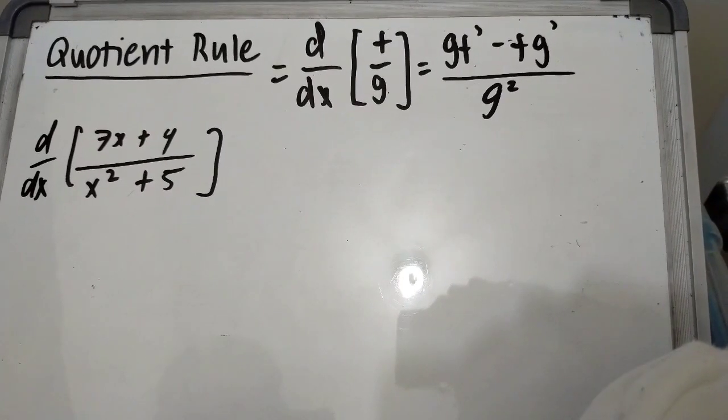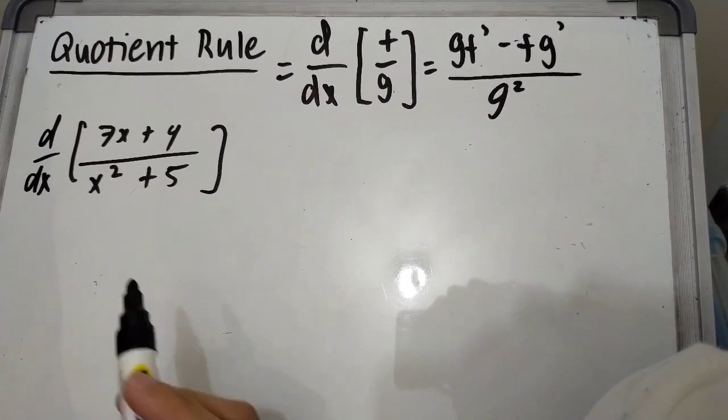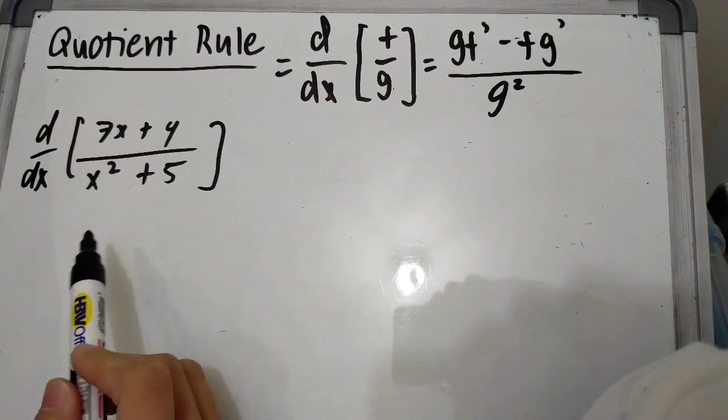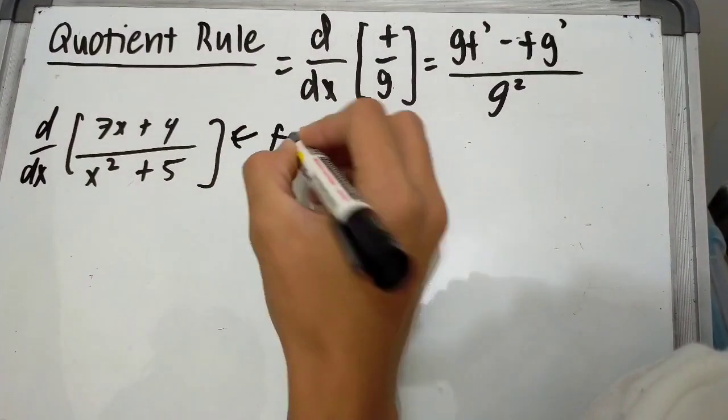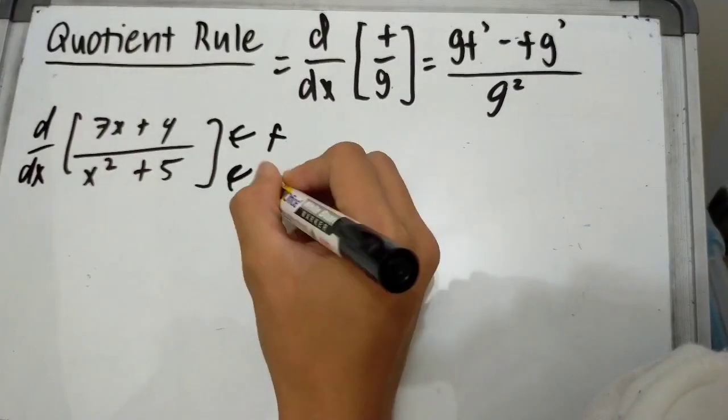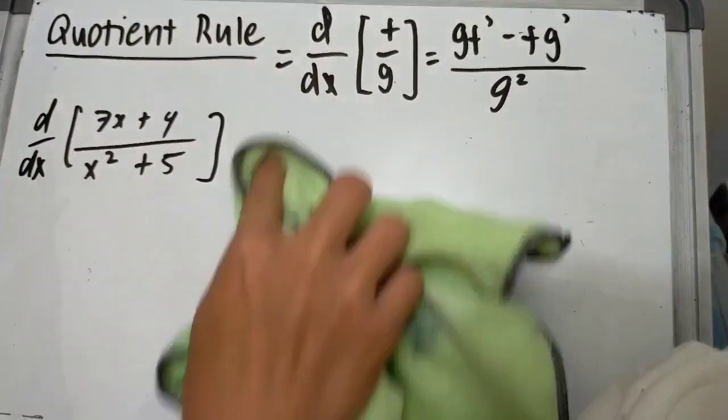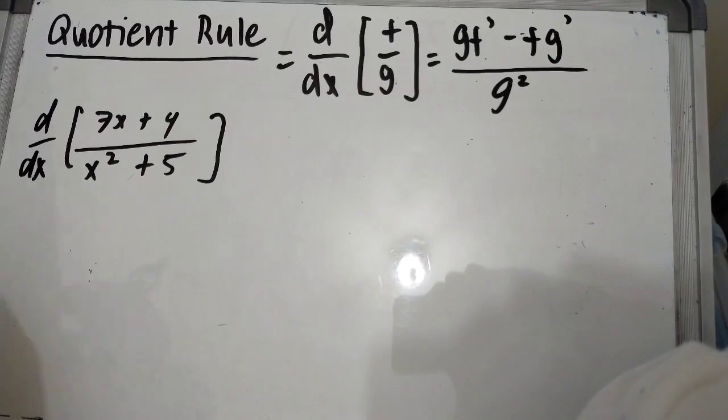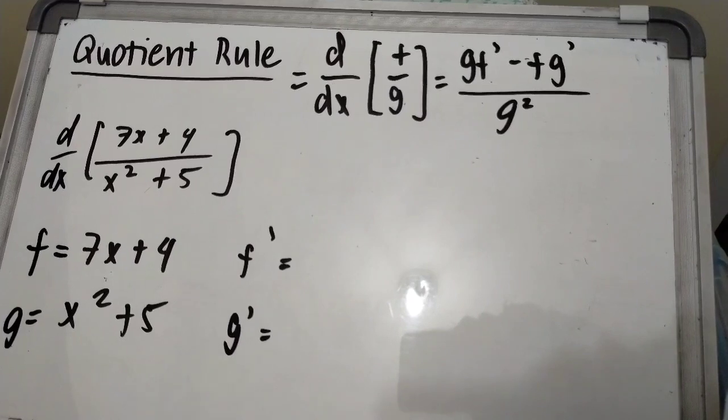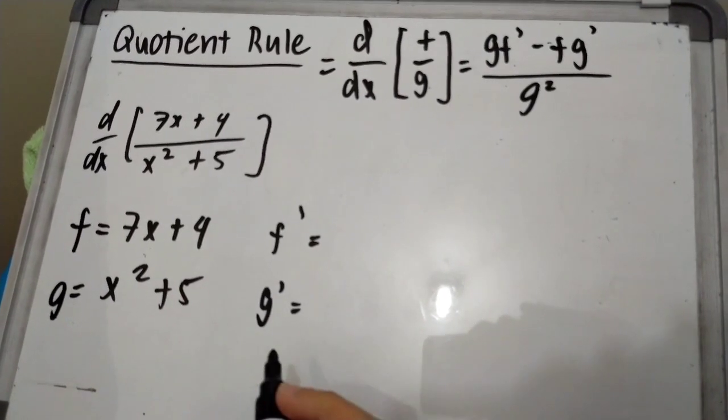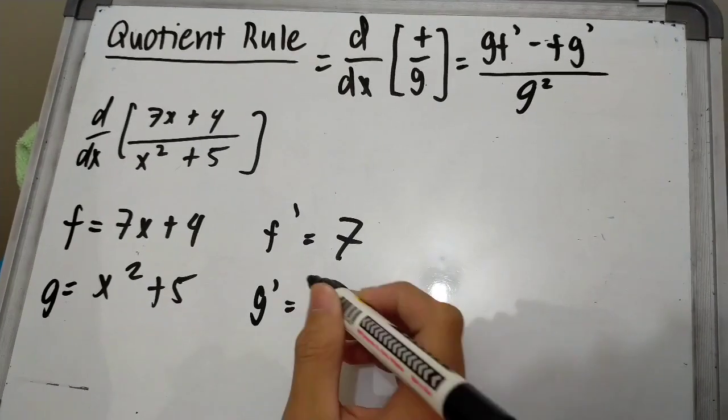We are now done with the product rule. Next up is the quotient rule. Let's try to solve this problem: (7x + 4) divided by (x² + 5), where f equals the numerator and g equals the denominator. The derivative of f equals 7 and g' equals 2x.